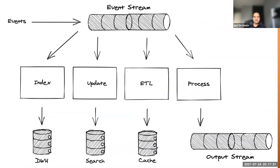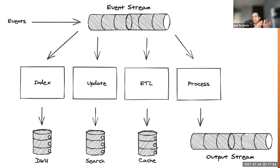Everything starts with this picture — a similar picture shown everywhere — where people try to explain streaming or event streaming. Events come and go into a data structure that is an array, a pipe, a band, or whatever you want to call it. You can append elements, you have a sequence, and then you can read from beginning to end.